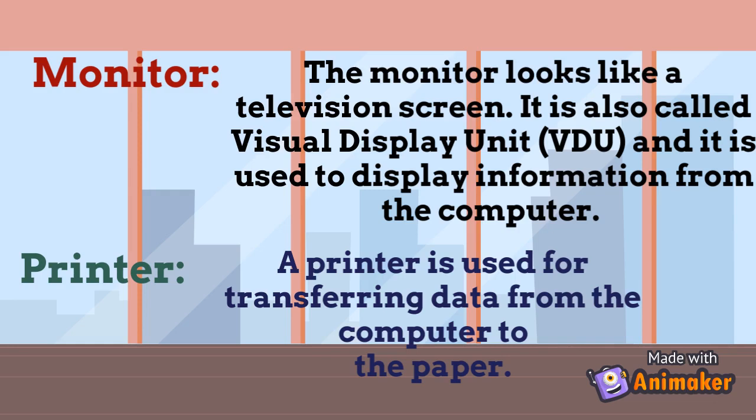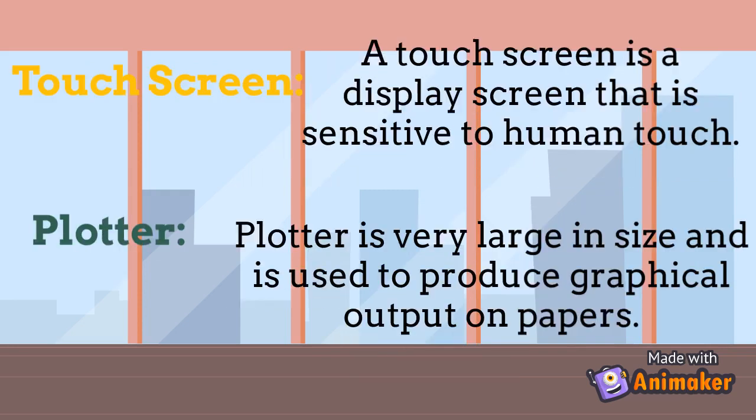The next output device is the printer. A printer is used for transferring data from the computer to paper — whatever you want to print, you can print from the computer. Then there is the touch screen: a touch screen is a display screen that is sensitive to human touch. All the phones we are using right now are touch screens — whenever we press or touch the screen, it is very sensitive and responds to whatever key or button we touch. There is also the plotter, which is very large in size and is used to produce graphical output on paper.